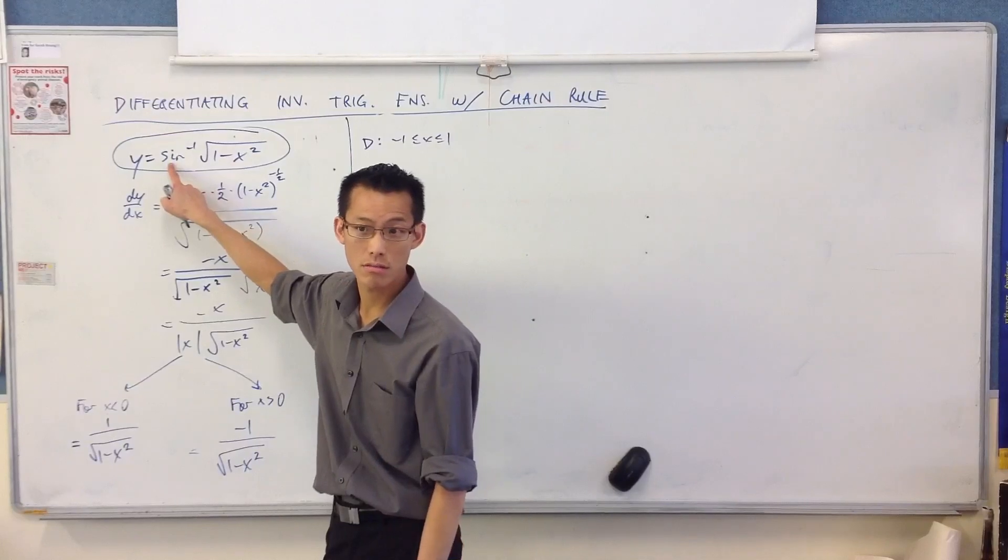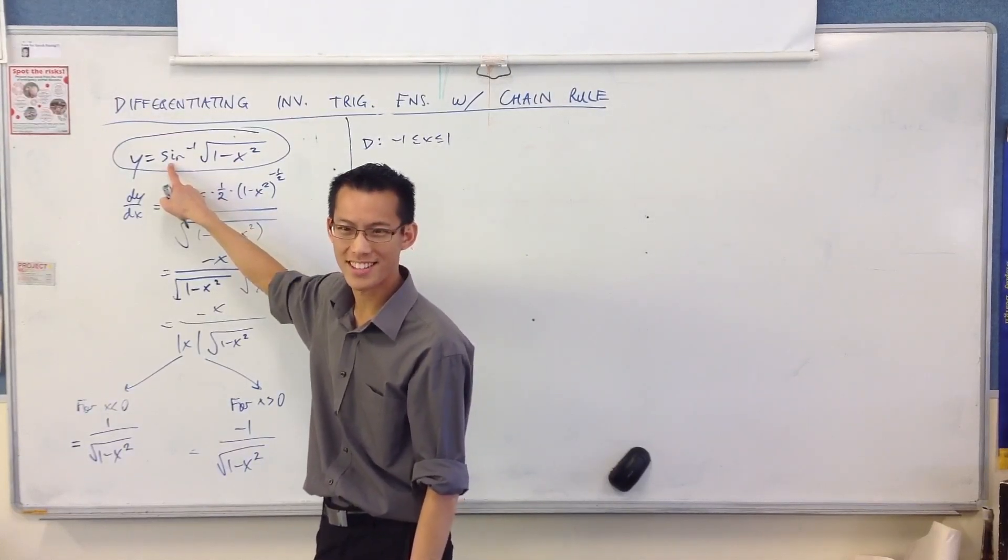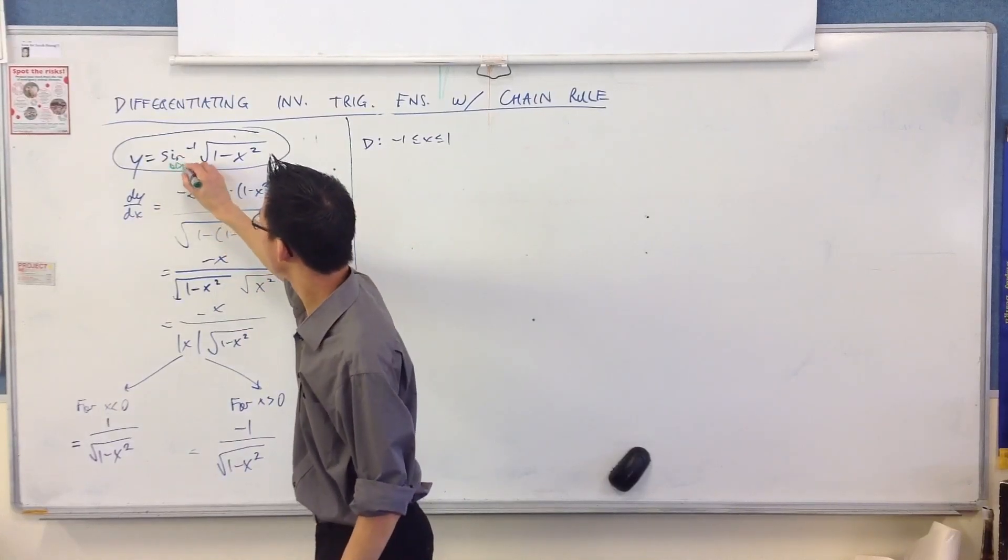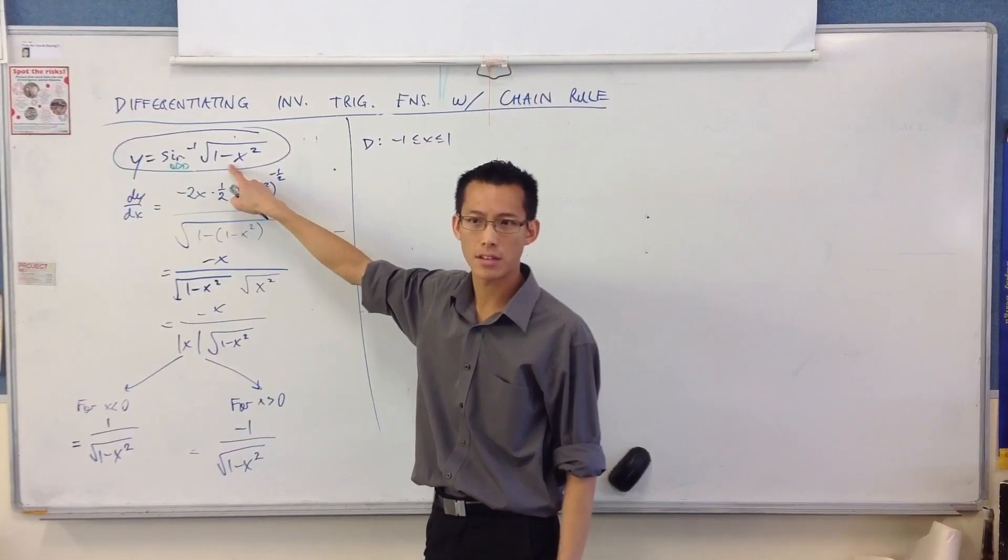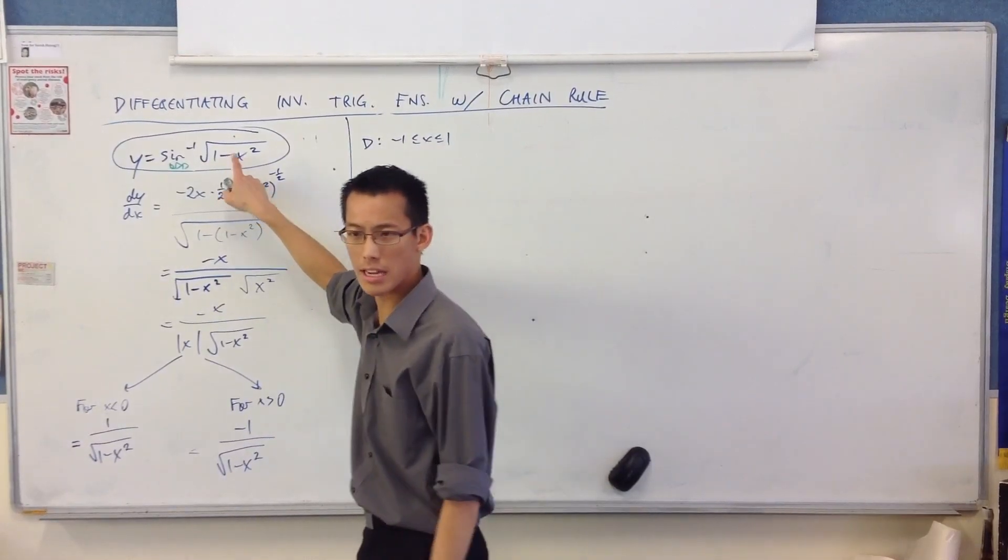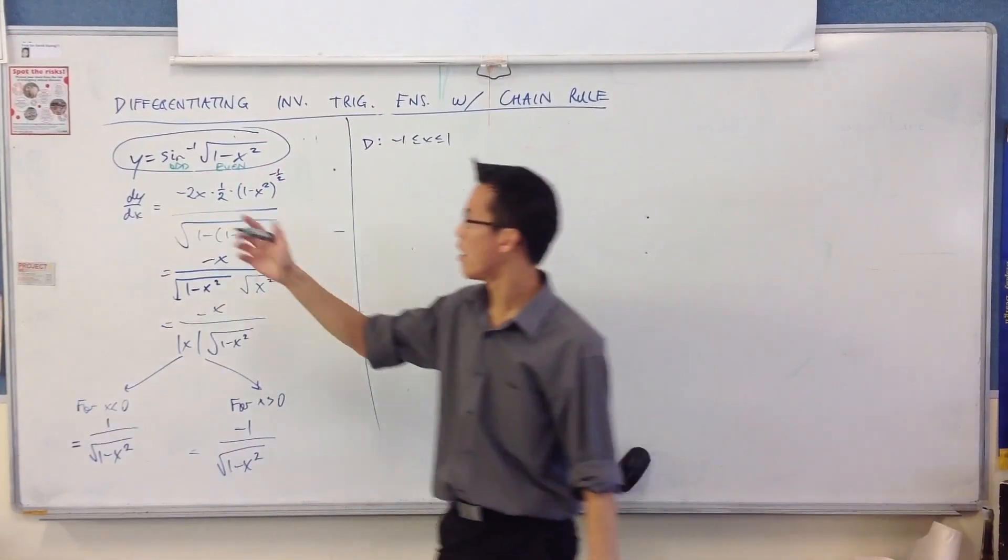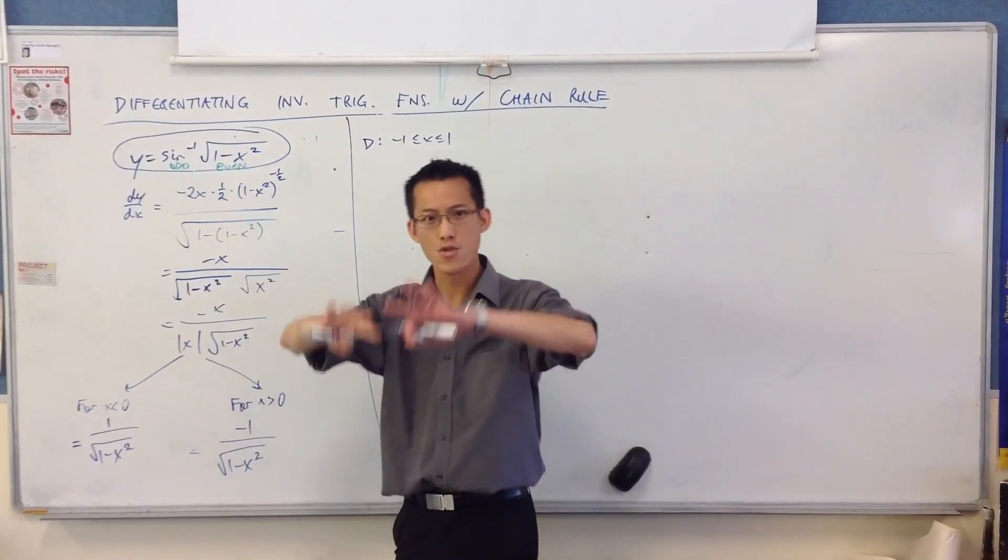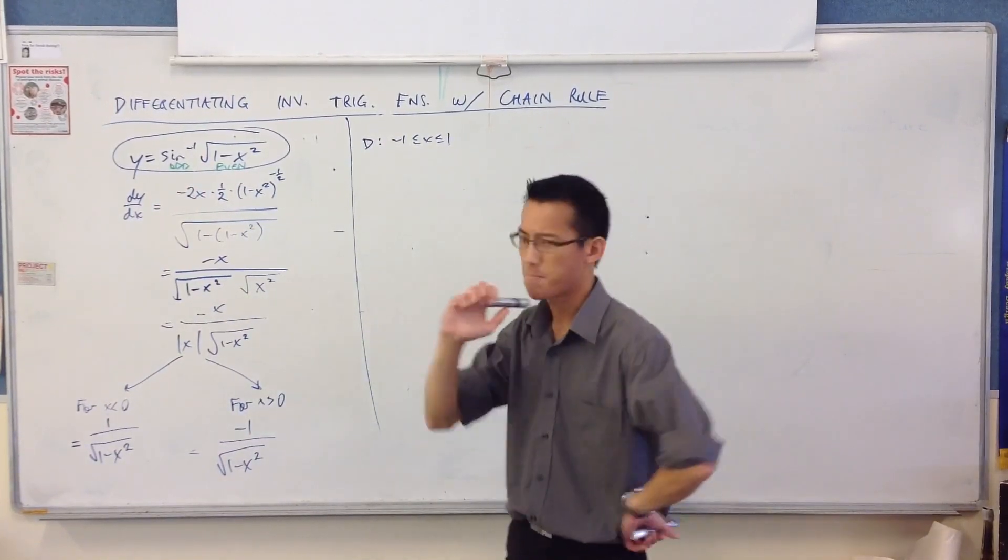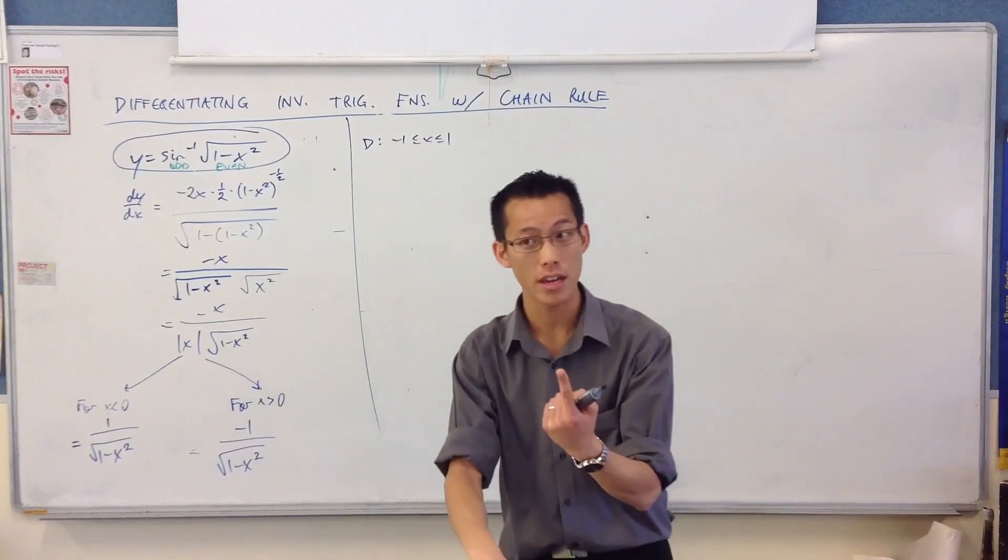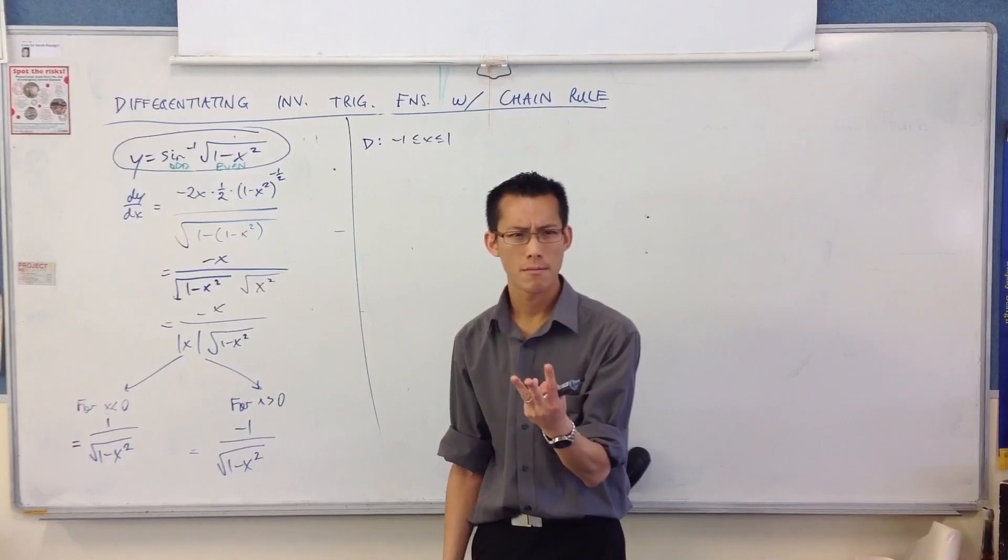Sine inverse, does that have symmetry? Sine inverse, it has odd symmetry, right, on its own anyway. What about this? What kind of symmetry does that have? This is an even function, right? And when you take an even function and you apply an odd function to it, what do you think will happen? Well, it should become... do you get no symmetry? Do you get odd symmetry? Or do you get even symmetry?